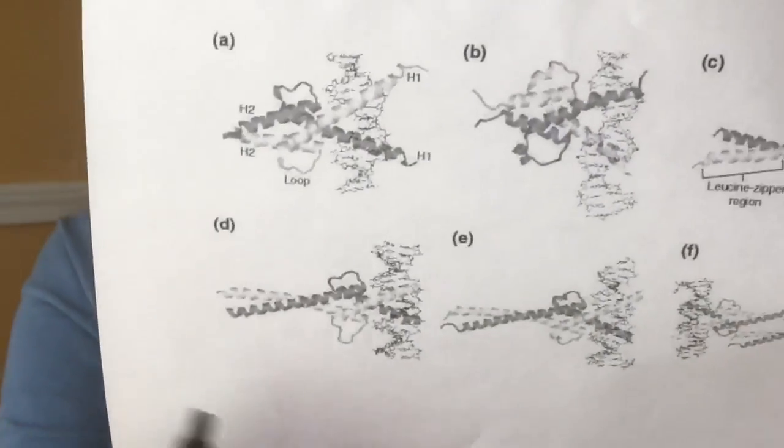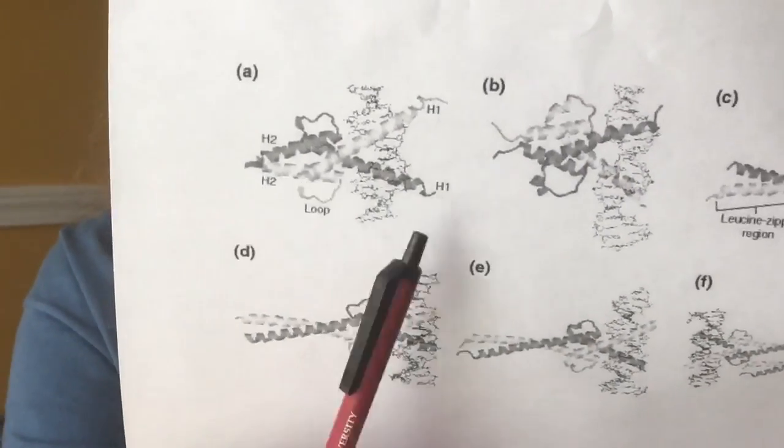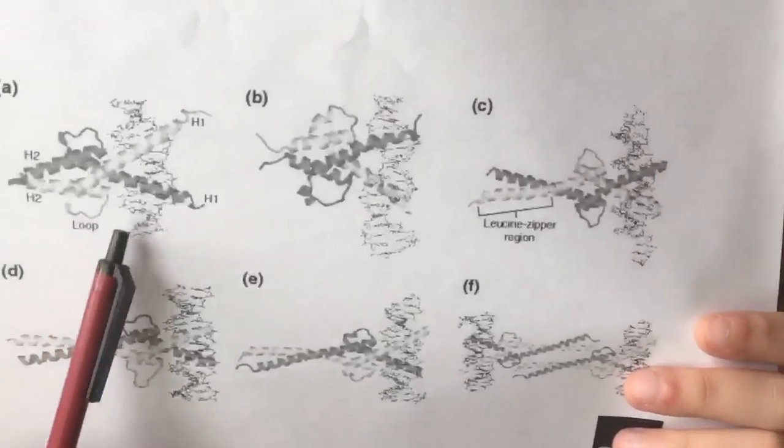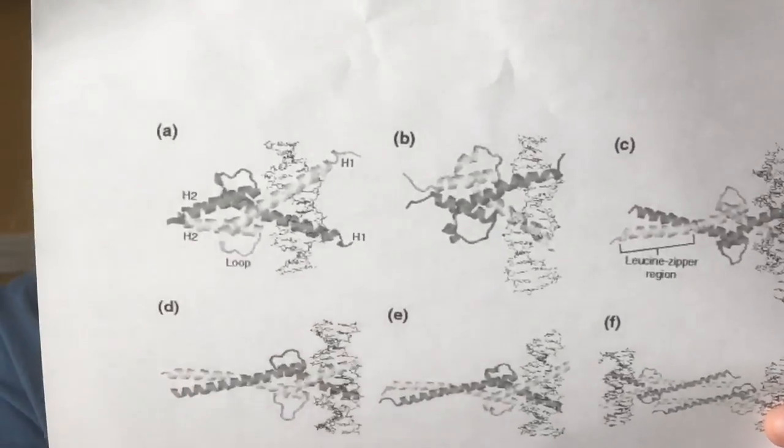The structure of BHLH in general contains two alpha helices joined together by a loop. BHLH proteins are associated with transcription factors in eukaryotes, so they are necessary for DNA binding.